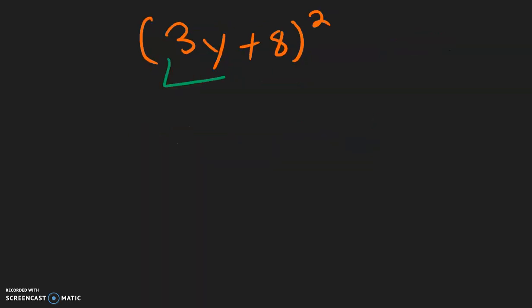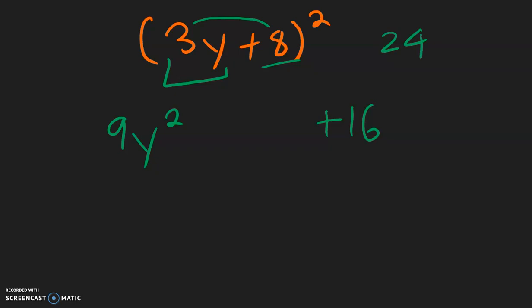Here we have 3y times 3y, which is 9y squared. And then 8 times 8, which is positive 64. Then multiply the front times the back and multiply it by 2 and put it in the middle: we get 48y.